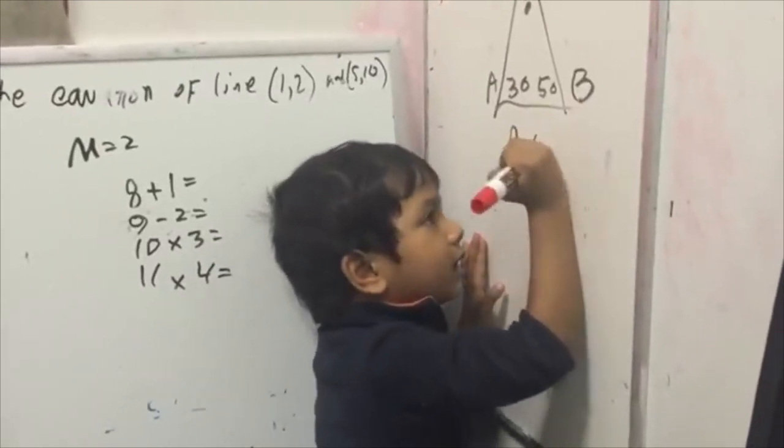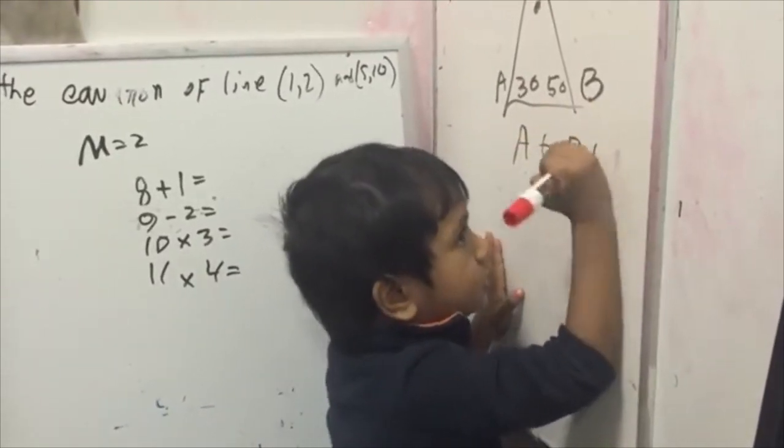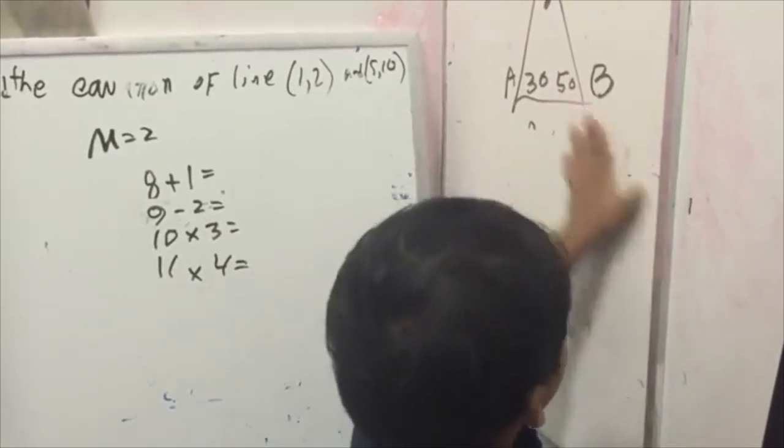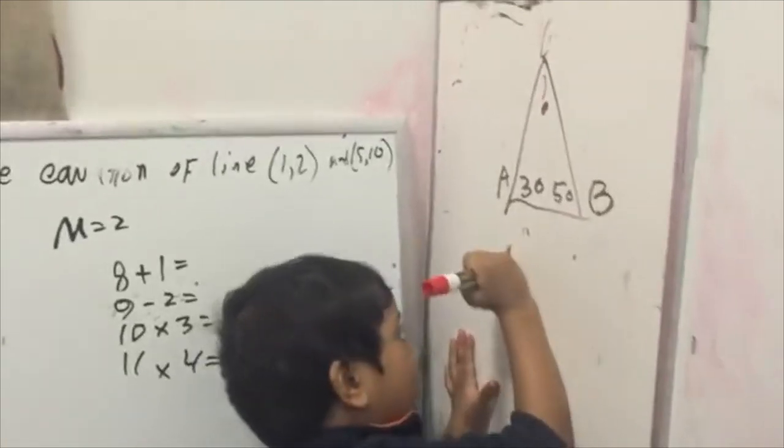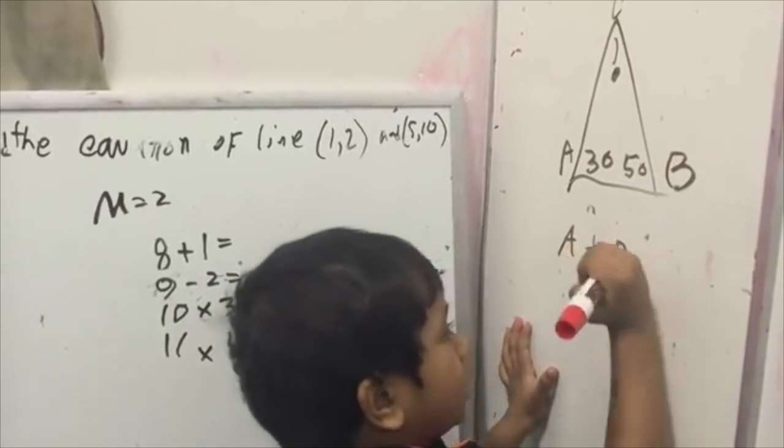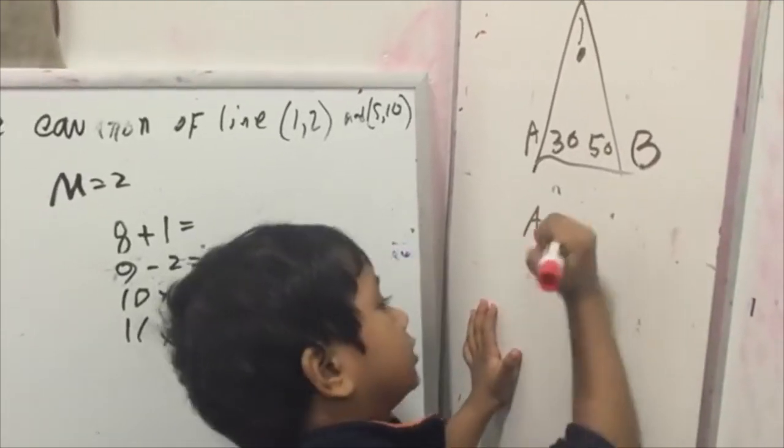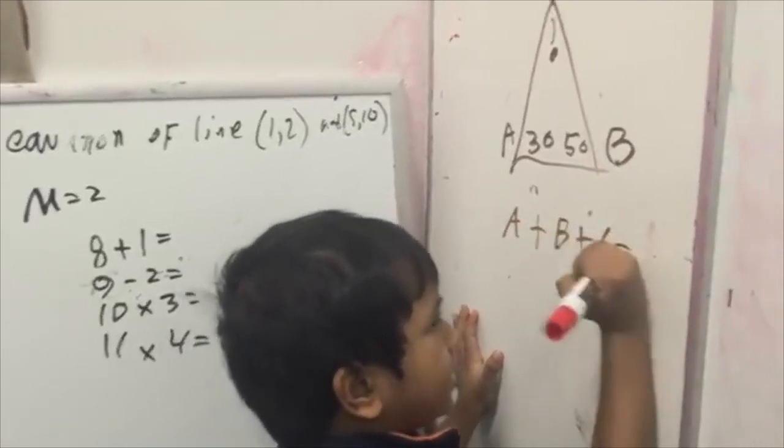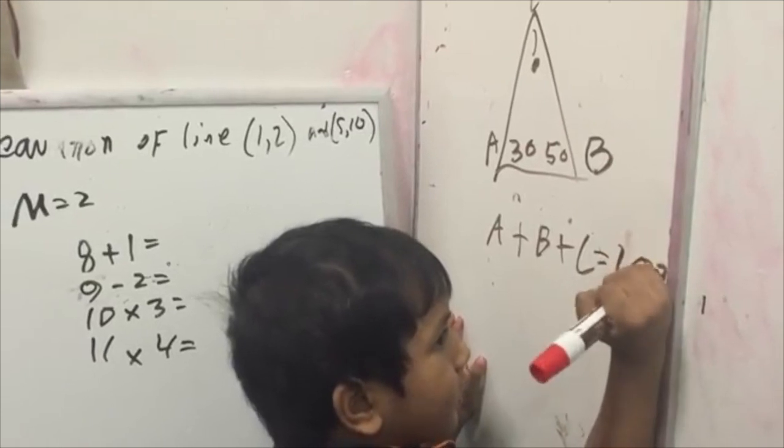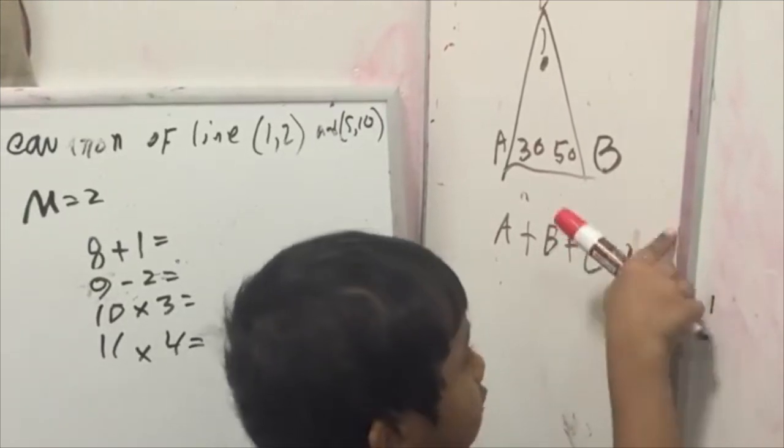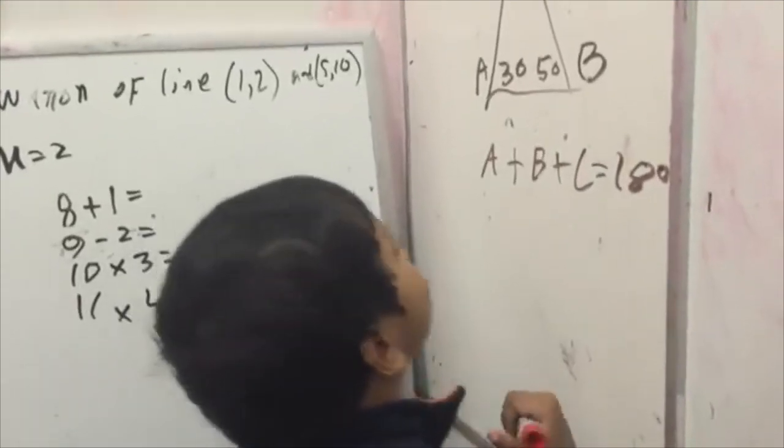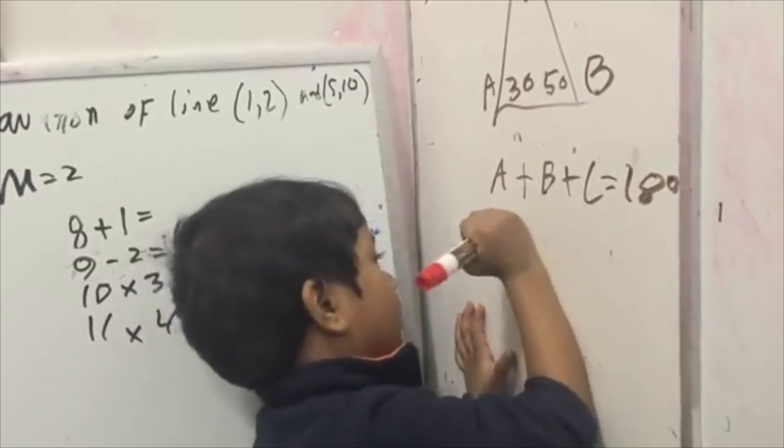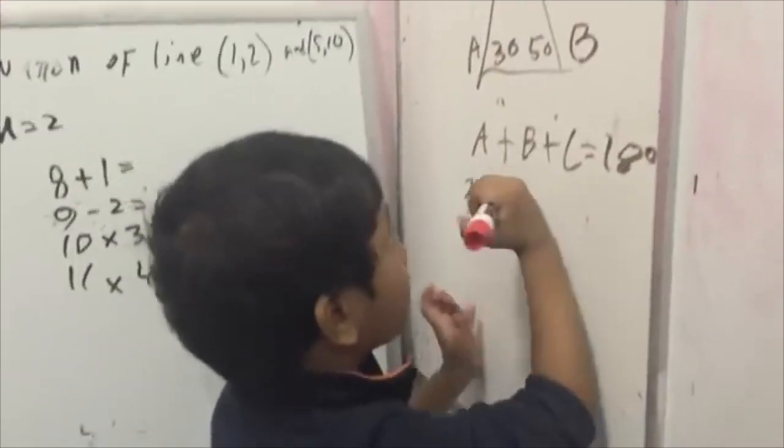A plus B plus C is... you don't need more space already. A plus B plus C is 180 because you know A is 30 and you know B is 50.